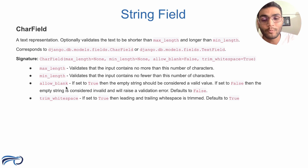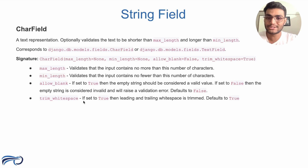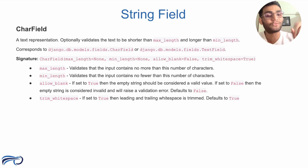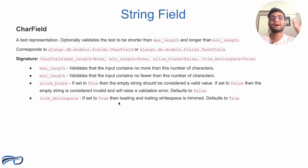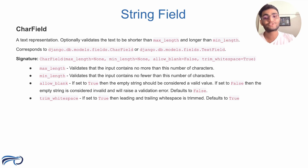allow_blank, as discussed earlier, controls whether blank strings are permitted. trim_whitespace, when set to True, means the leading and trailing whitespace will be trimmed from the input. For example, if you pass 'texttosave     ' with trailing spaces, it will automatically get trimmed and stored as 'texttosave'.